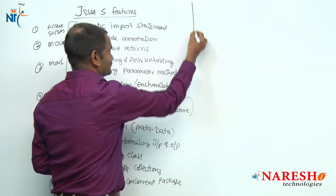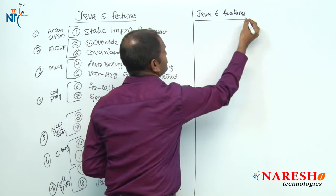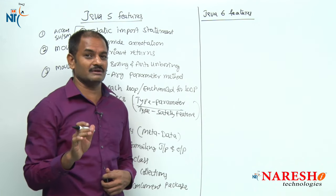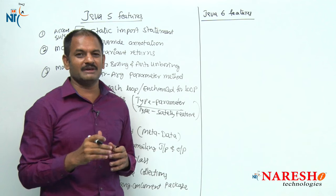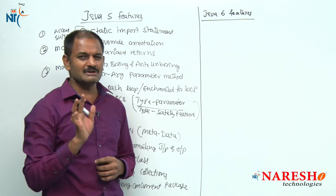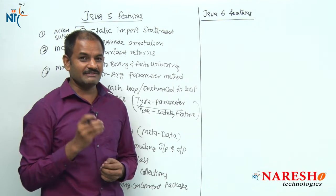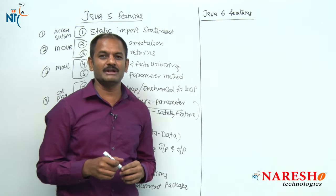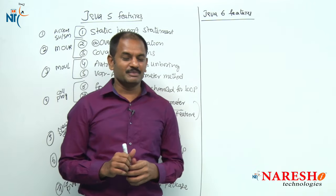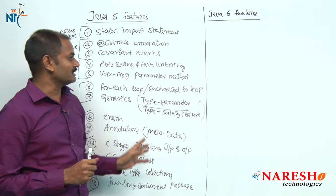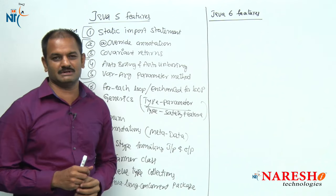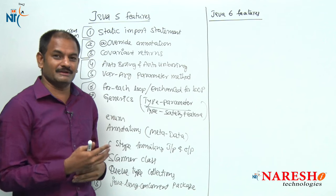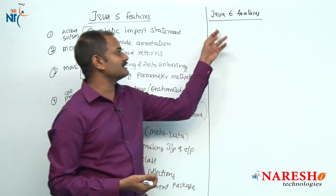The target of Java 6 version is not concentrated on any language level enhancement or API level enhancements. There is not much new content in Java 6 — it came to solve the problems of Java 5. Java 5 is considered a somewhat failure version because of its many new features; whenever those features are implemented, execution becomes slow. Java 6 came to improve performance and faster execution.